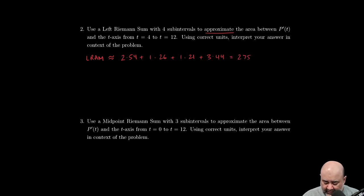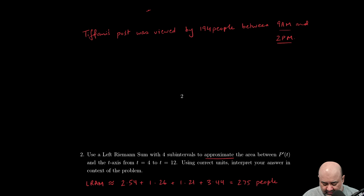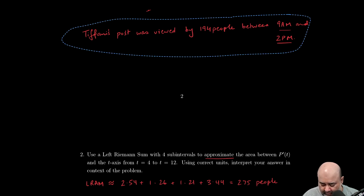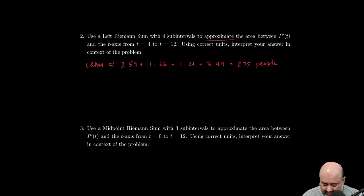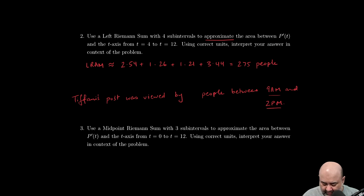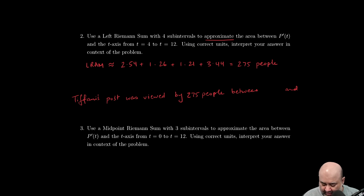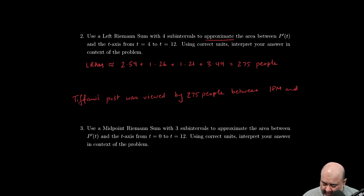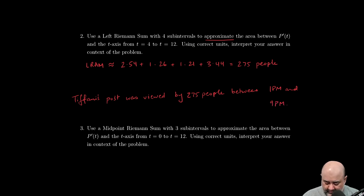And if we clean this up, I did this earlier, it's 275. And again, we already did the unit analysis in the previous problem, so this should be people. And in fact, we don't have to reinvent the wheel. Don't do this on the AP exam; don't change the context. Use the exact same sentence. Was viewed by 275 people. And now, again, remember to change the times to fit the problem. So we are four hours after 9 AM, so that's 1 PM, and 12 hours after 9 AM, so that's 9 PM. And that's it.